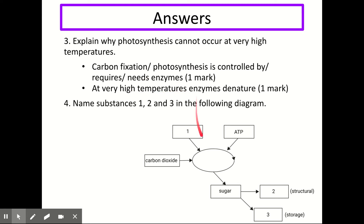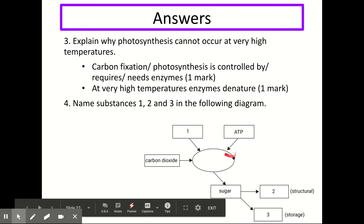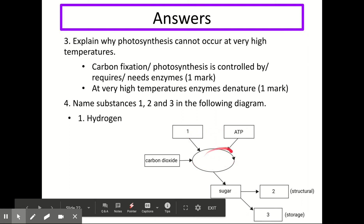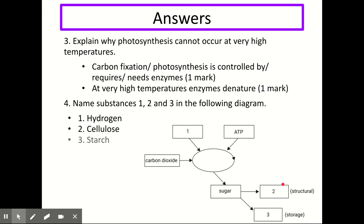The next question asks you to name substances one, two, and three from the diagram. Substance one is coming into the carbon fixation cycle along with carbon dioxide and ATP, so this must be hydrogen. Then we have our series of enzyme-controlled reactions which produce sugar. This sugar can be converted into two things: a structural carbohydrate and a storage carbohydrate. Our structural carbohydrate for number two is cellulose, and our storage carbohydrate for number three is starch.